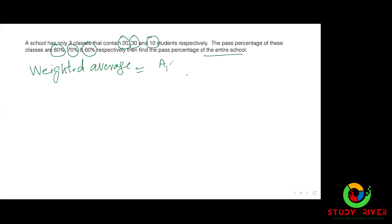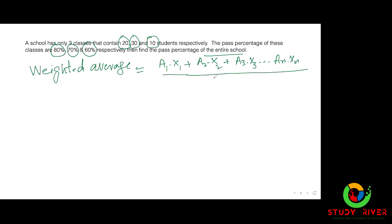جو بھی آپ کی average ہے، multiply کریں X1 سے — پہلی کی تعداد کو اس کی average سے multiply کرنا ہے۔ Plus A2 × X2, plus A3 × X3, and so on, An × Xn۔ اور نیچے جو ہے صرف جو تعداد ہے اس کو جمع کرنا ہے: X1 + X2 + X3, and so on, + Xn۔ (Whatever your average is, multiply by X1 — multiply the count of the first by its average. Plus A2×X2, plus A3×X3, and so on An×Xn. And below, simply add all the counts: X1+X2+X3, and so on, +Xn.)